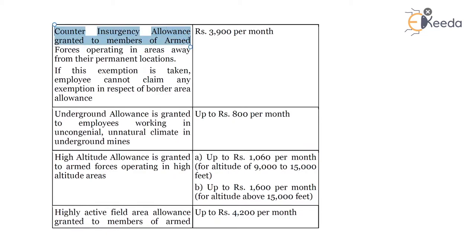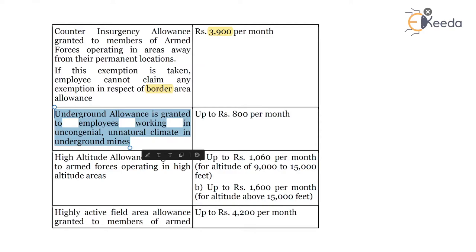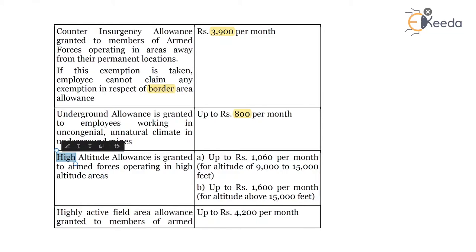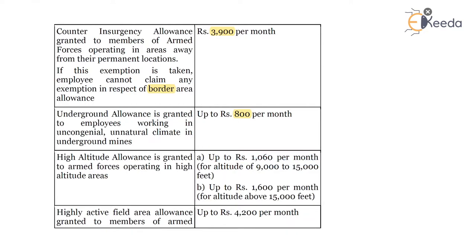Counter-insurgency allowance granted to members of armed forces operating in areas away from their permanent locations: the exempt amount is 3,900, with restriction of border area allowance. Underground allowance is granted to employees working in uncongenial, unnatural climate in underground mines: up to 800 per month is the limit. High altitude allowance is granted to armed forces operating in high altitude areas: up to 4,200 per month, or up to 1,060 per month for certain altitude ranges, and up to 600 per month for altitude above 15,000 feet.